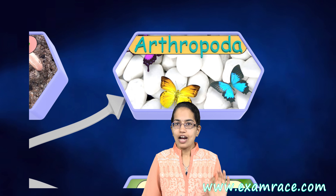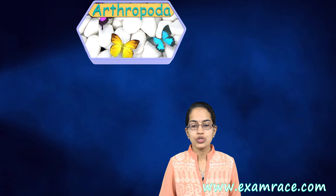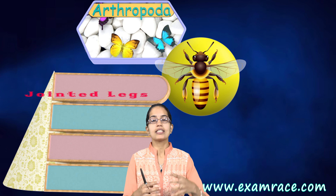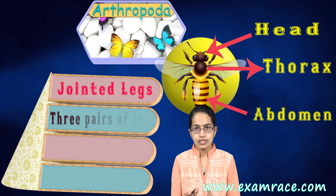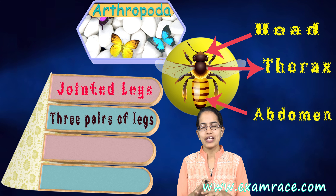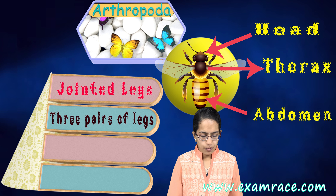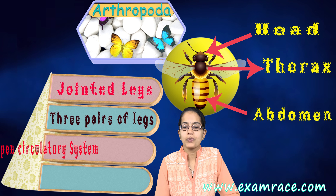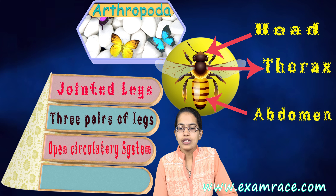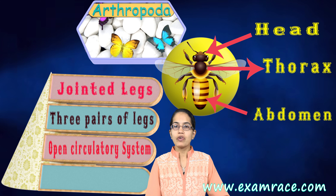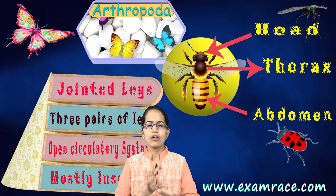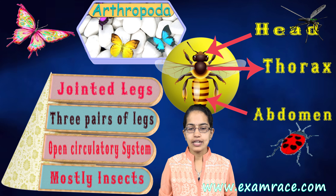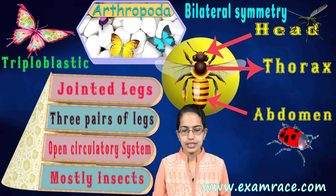Coming on to Arthropoda, which is the largest group and therefore very important. They have jointed legs. The body is divided into head, thorax, and abdomen, with three pairs of legs — that is six legs. They have an open circulatory system, which is very important. Butterflies, insects, and mosquitoes are all examples of Arthropoda. They are also triploblastic and bilaterally symmetrical.